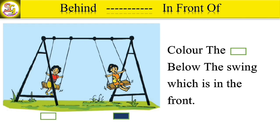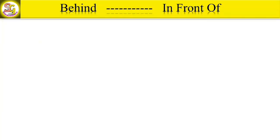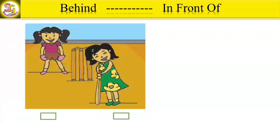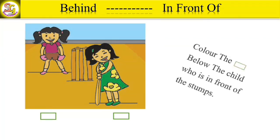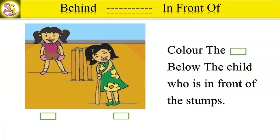Very good. Now look at this picture carefully. Color the square below the child who is in front of the stumps.